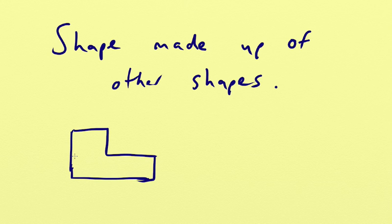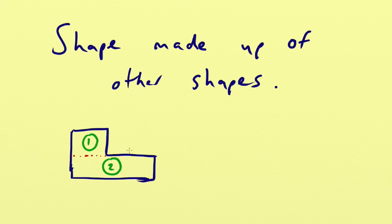If we draw a little line there, we can see that we've got some more regular shapes. We've got one which is like a square or a rectangle, and we've got a rectangle just there. The point is, if you're given an odd shape like this L shape, but you're able to split it into other shapes like squares and rectangles, you're able to use those much more easily — and that's the method we're going to use to work out the area of a compound shape.